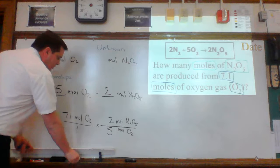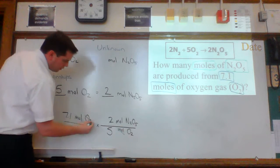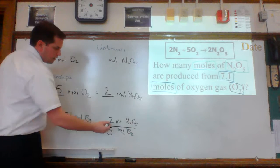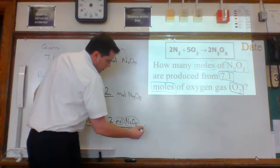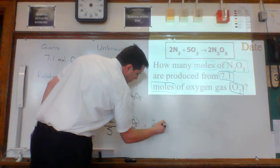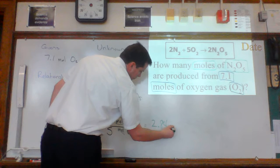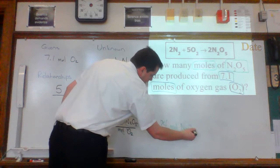Good. Now we can do the math. Moles cancels moles. O2 cancels O2. And you're left with moles N2O5. And you should get 2.84 moles N2O5.